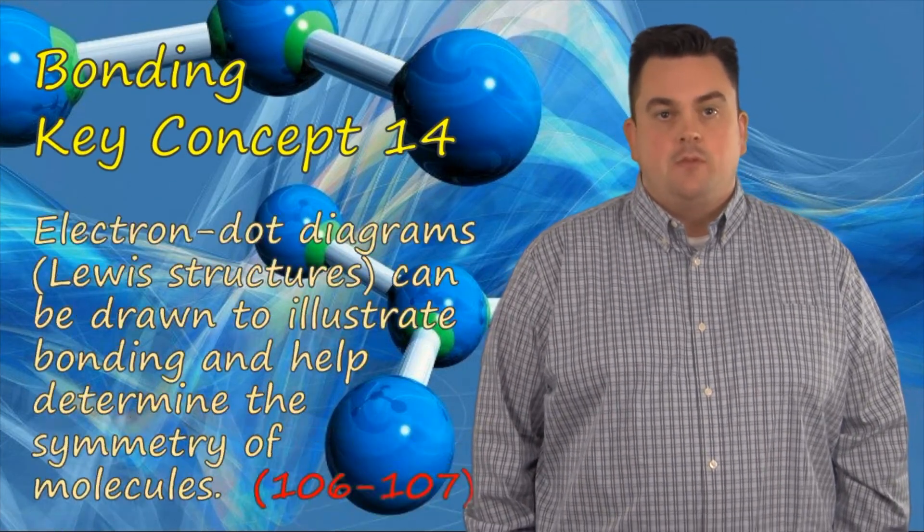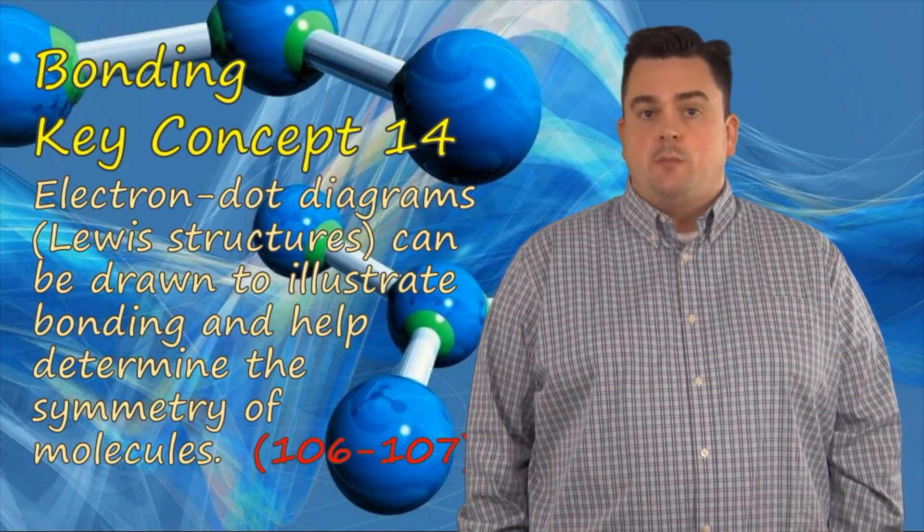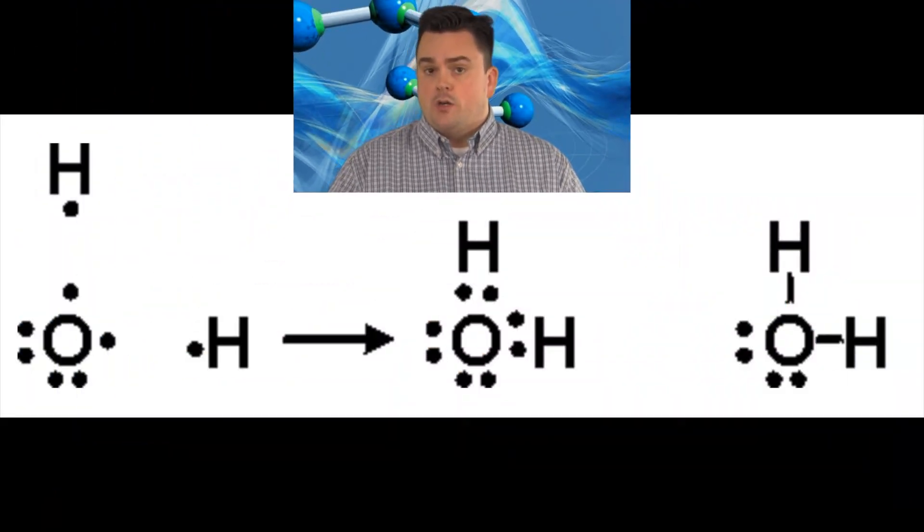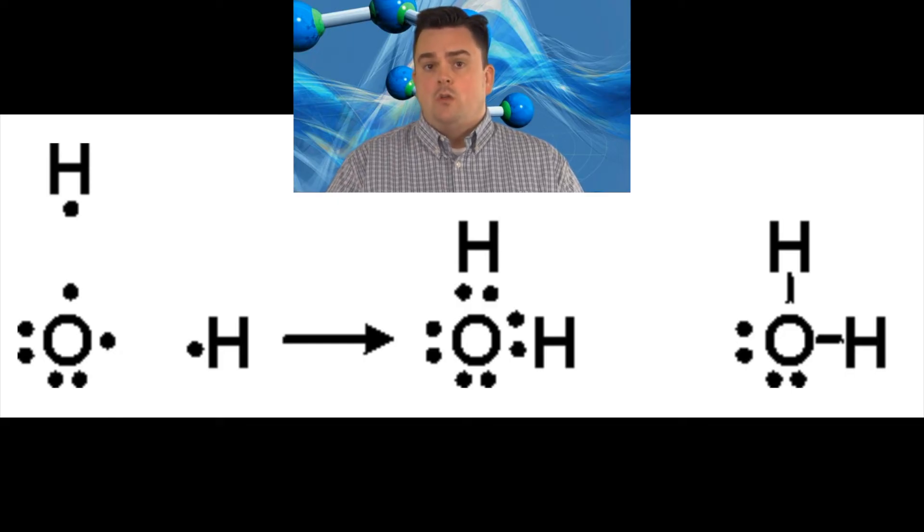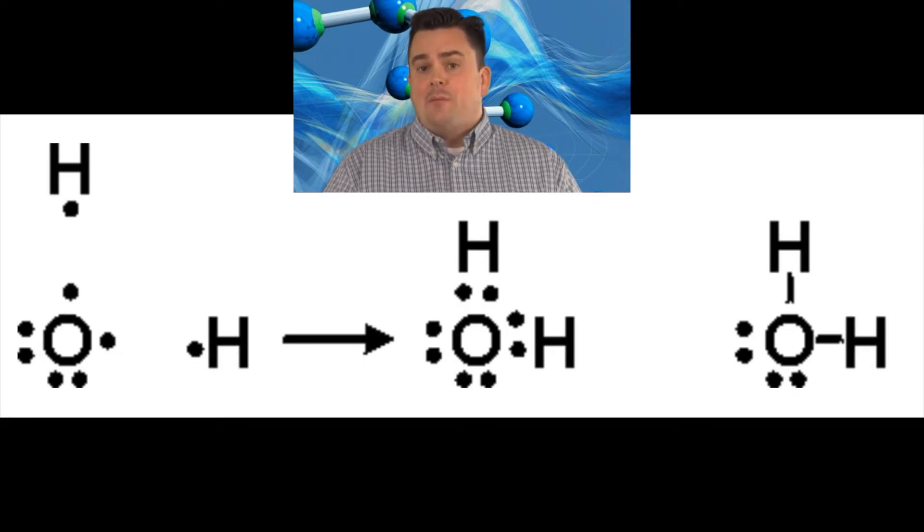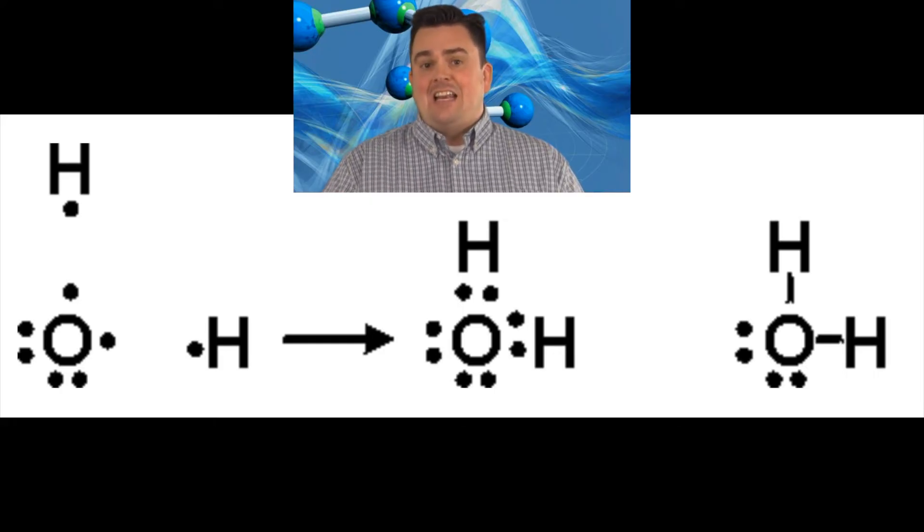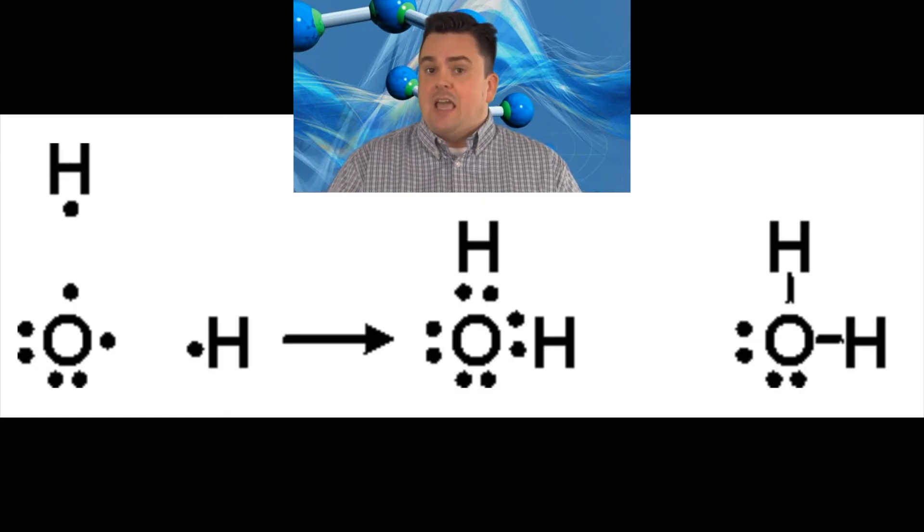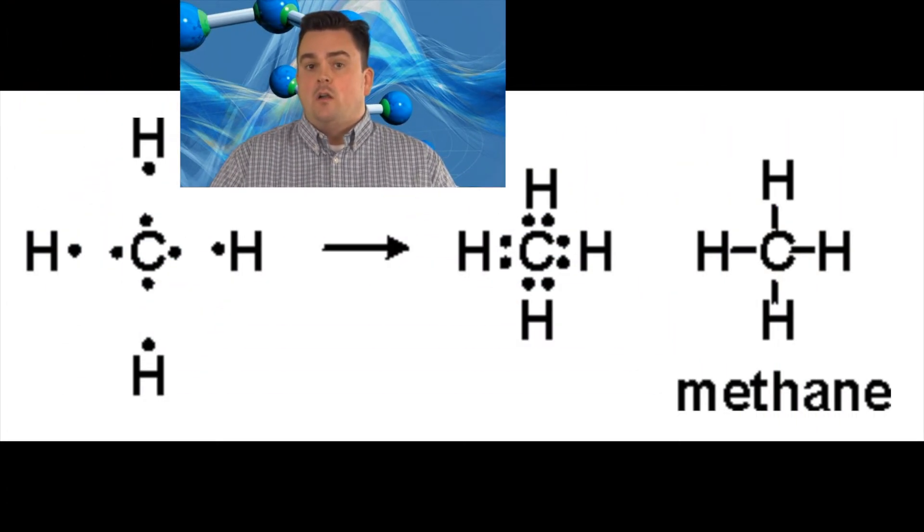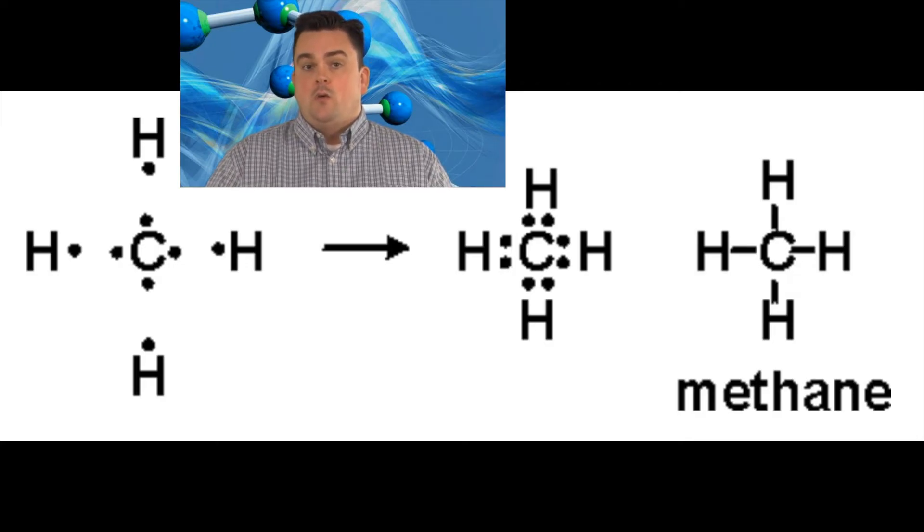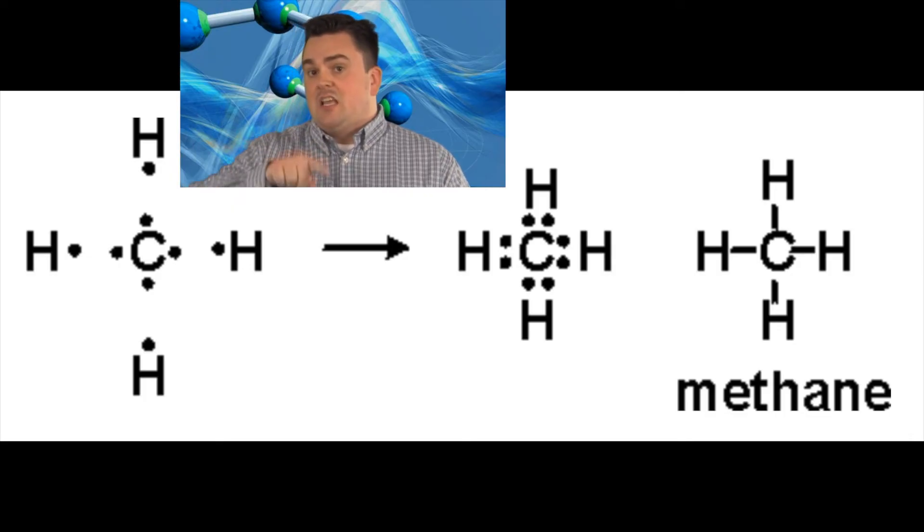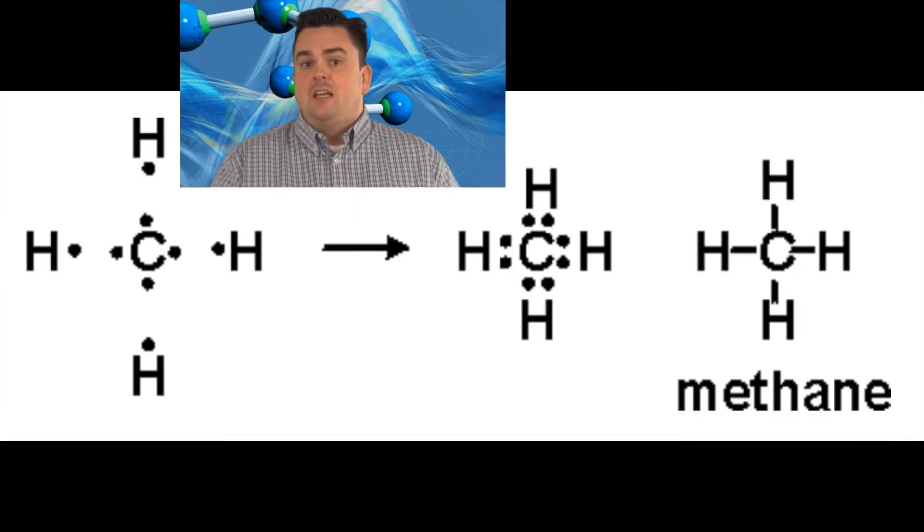Bonding key concept 14. Electron dot diagrams, Lewis structures, can be drawn to illustrate bonding and help determine the symmetry of molecules. Our examples here are for water. First, we have H's coming together with the O. When we draw our Lewis structure, we see that our central atom, oxygen, has pairs of dots on it, which means it's a bent molecule, not linear. This means it's asymmetrical, and if it's asymmetrical, it has to be polar. Our other example here for methane, CH4, when we bond it correctly as a Lewis diagram, we see that there are no unbonded pairs of electrons on our central atom, carbon. This means that everything is the same all the way around. We see that it is symmetrical and nonpolar.